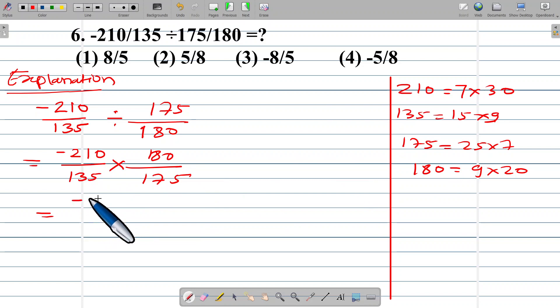Negative 210 means negative 7 multiplied by 30 upon 135 means 15 multiplied by 9 multiplied by 180 means 9 into 20 and 175 means 25 multiplied by 7. In cancellation method,